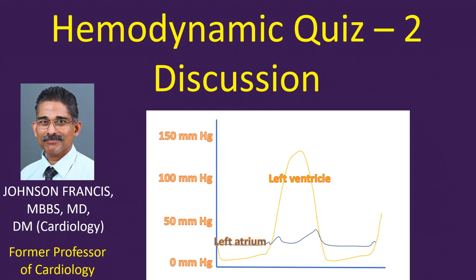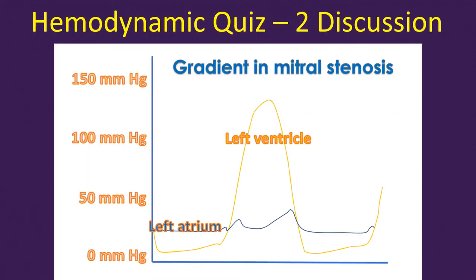Here are the simultaneous pressure tracings from the left ventricle and left atrium. What is the interpretation? In diastole, the left atrial tracing can be seen at a higher level than the left ventricular tracing, indicating a transmitral gradient. Normally there is hardly any gradient when the mitral valve is open. So in this case there is mitral stenosis elevating the left atrial pressure.